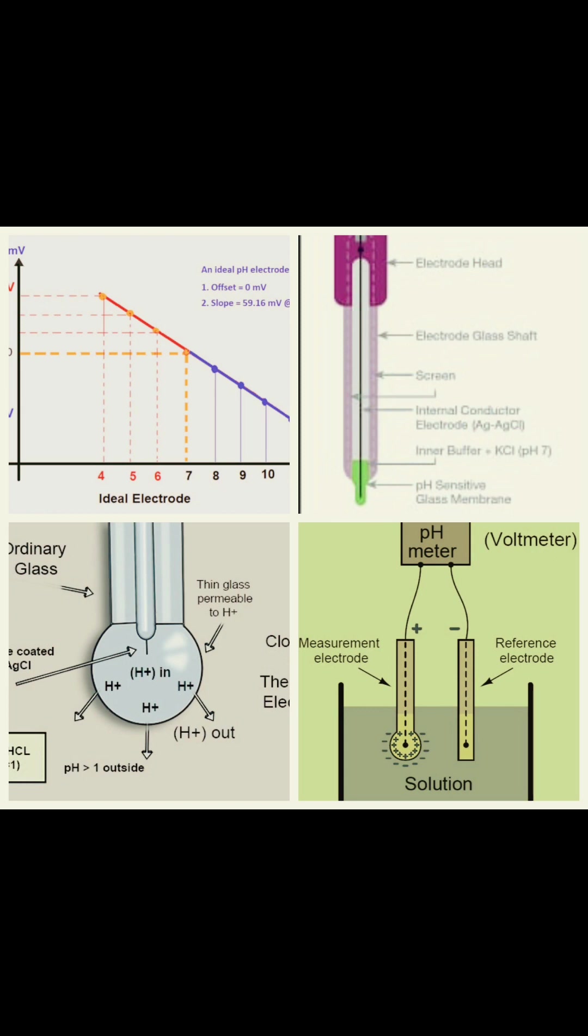One electrode is made of special glass, so it's called the measurement electrode.